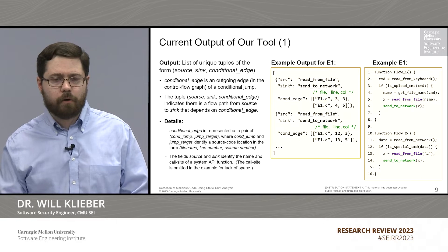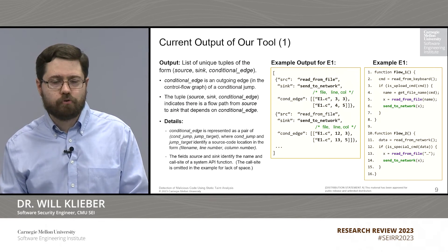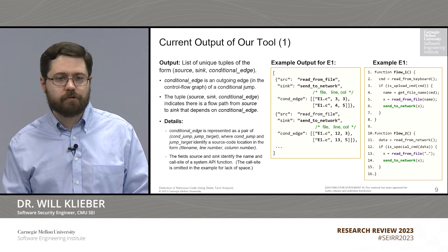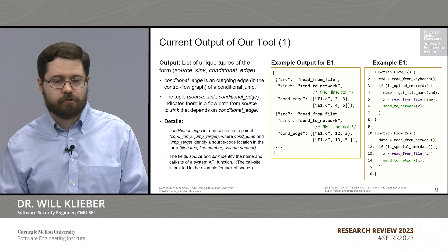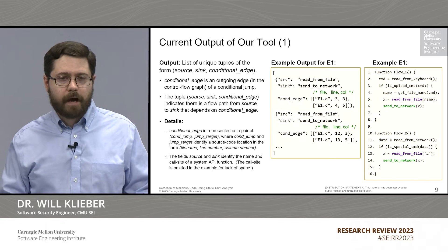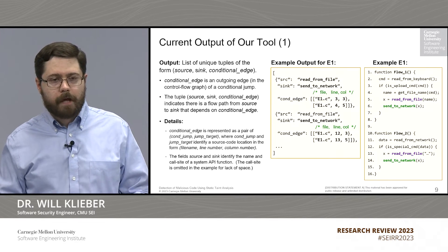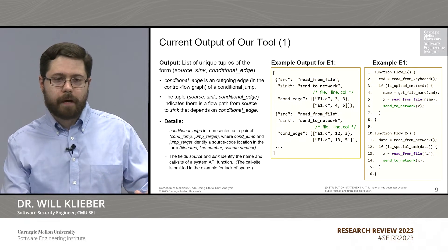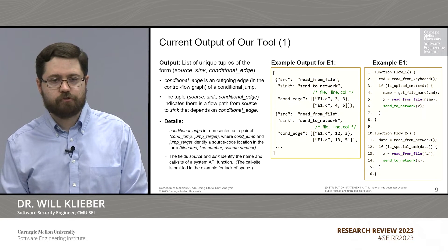Currently, our tool is not quite at that stage. Currently, its output is a list of tuples of the form source, sink, and conditional edge. Here, conditional edge is the outgoing edge in the control flow graph of a conditional jump. The tuple — source, sink, conditional edge — indicates that there is a flow path from the source to the sink that depends on the specified conditional edge.